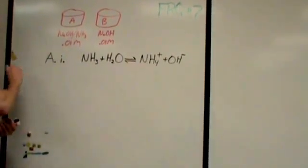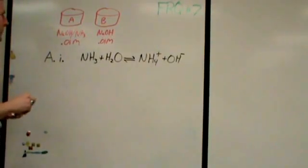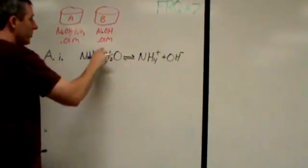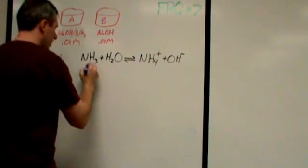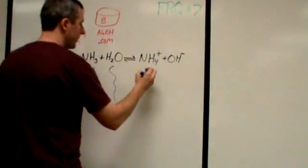And A part one says, which of the pHs would be greater or less than, or would they both be the same? And specifically it's asking about A, where you have a hydroxide concentration of 0.01 molar, and then you have some base in addition to that.